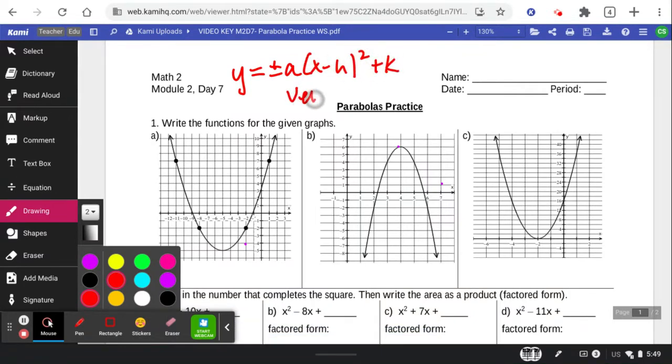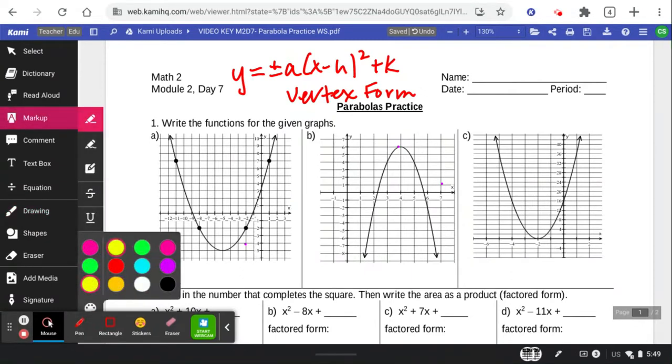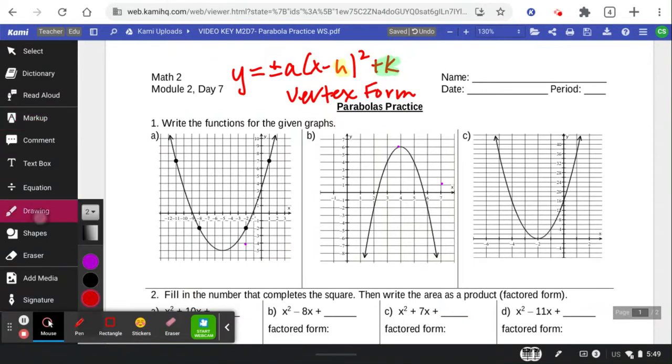This is known as the vertex form of a parabola. And our key parts are the H and the K, which is known as our vertex.